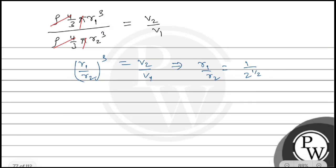In the question, we're given r1 by r2 equals 1 upon 2 to the power 1 by 3, and the question asks for v1 by v2, which is given as n upon 1. We need to find the value of n.